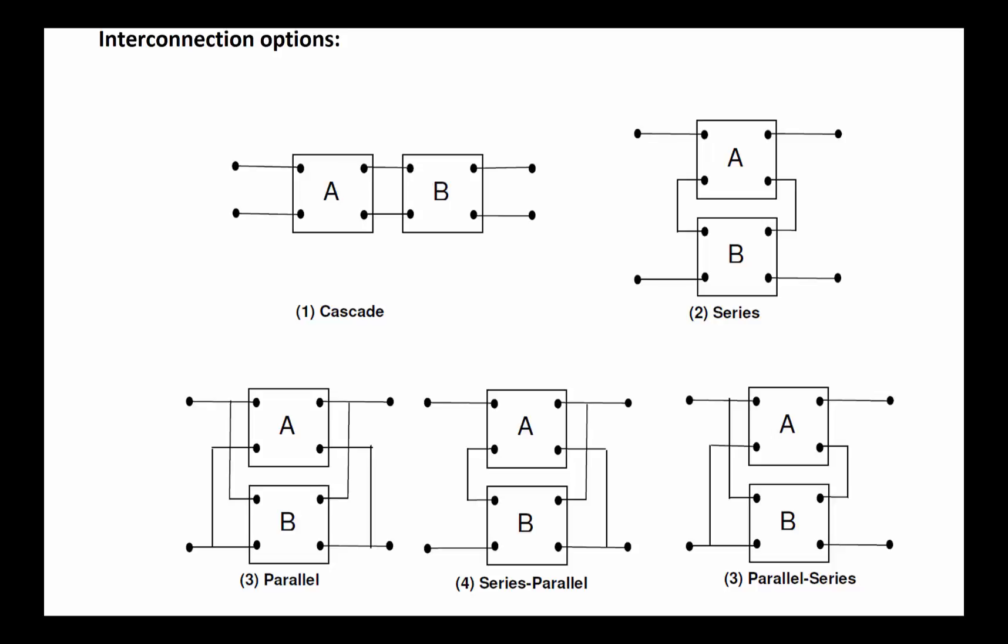Here are some handful of ways that these two-port circuits can be connected to each other. This is called cascading where one is attached to the other, so the output of this becomes the input of the next stage. Then this is a series version where the outputs are connected to each other and port ones and port twos are connected to each other. Parallel would be where each input port is connected to each other and the output ports are connected to each other. Then we have various combinations which are partly series and partly parallel.